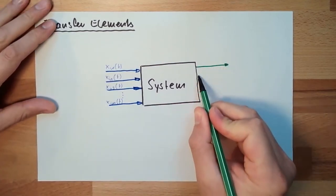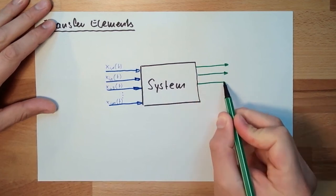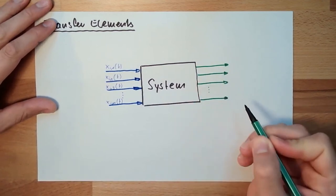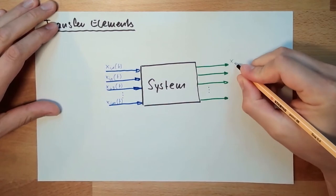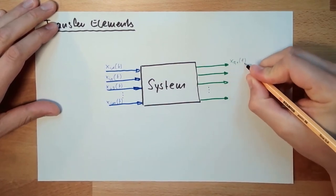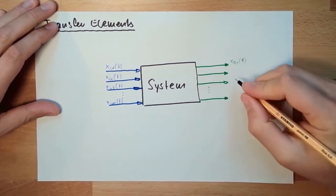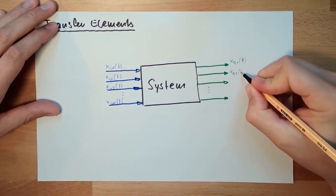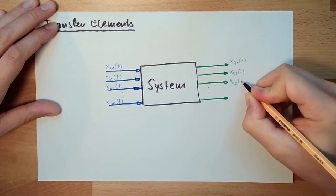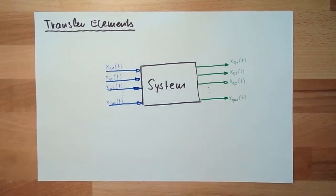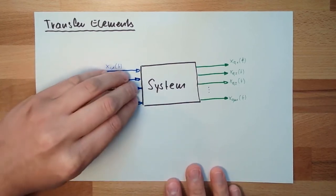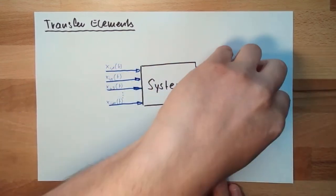So a system might also have a number of outputs. So they are not only the Xi's, they are also XO's. XO1, also from time, XO2, XO3, and XOm. It does not need to be the same amount. That's a system. And what the system is doing is whatever comes inside here is somehow producing what is going out.